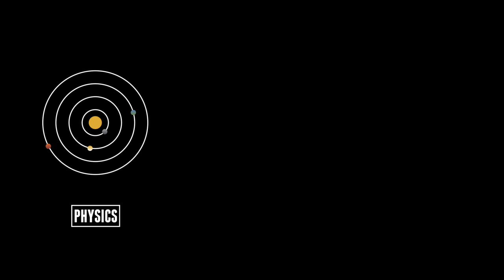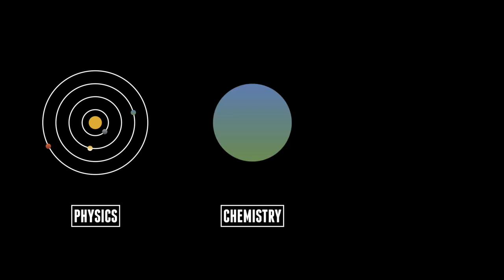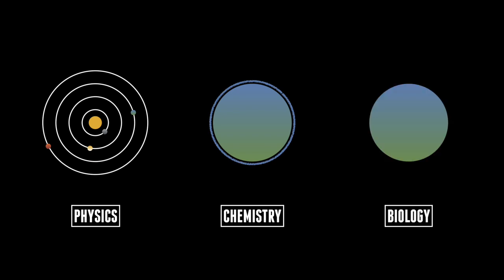It seems like planets are more abundant than stars in our galaxy, so scientists are using physics to work out the mass, the size, and the amount of planets in the galaxy. We'll be using chemistry to analyse the atmospheres, and hopefully biology to analyse life.